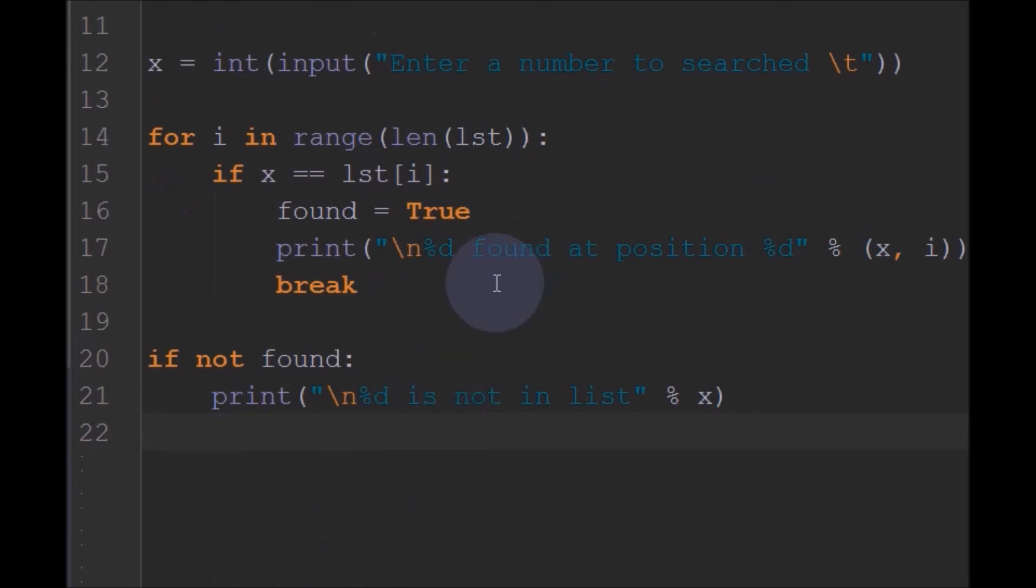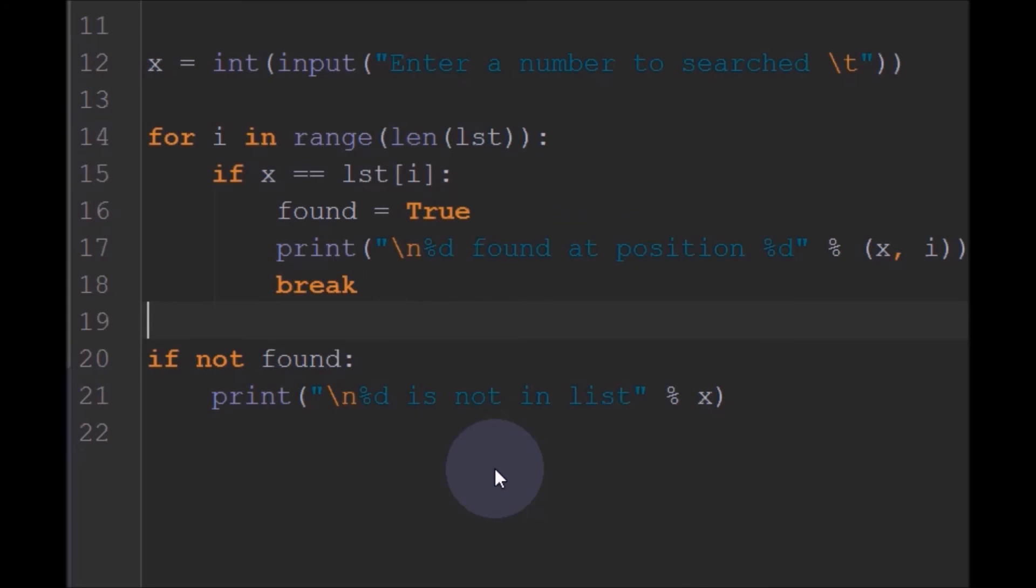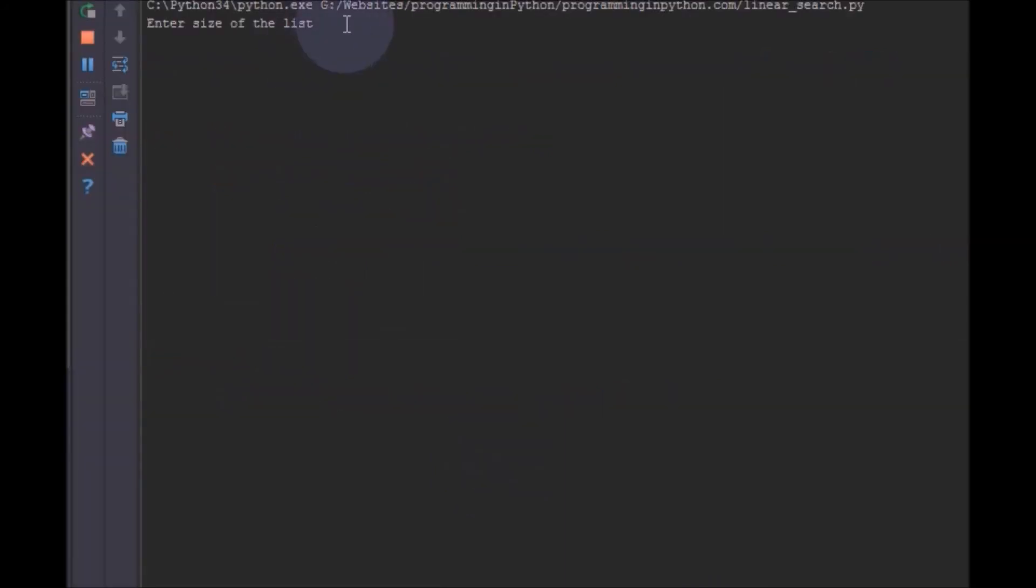And one more important thing to note is here in this linear search we need to give all the elements in ascending order. And you can see the 56 and the next number should be greater than this. So I will give 87. And the number to be searched I will give 87. And it shows 87 found at position 1. That is 0 and 1.